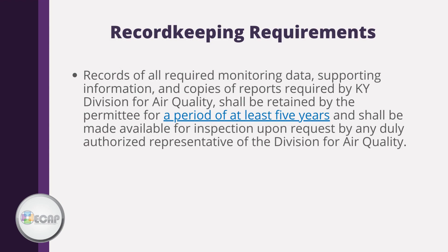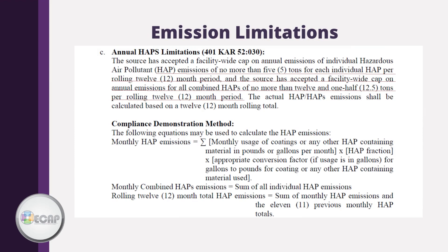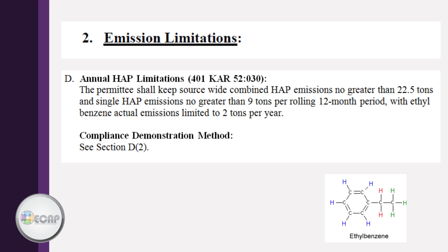Record keeping is the backbone of permit compliance and must be performed and reported as indicated by the permit. Records must be kept for a period of at least five years and must always be available for review. Hazardous air pollutants and volatile organic compound limitations usually require 12-month rolling totals to be kept. Your permit explains how to calculate the rolling total, usually in Section D. An example of a true emission limit is when a limit is imposed for a particular pollutant. This example from a conditional major permit requires rolling totals of HAP and VOC emissions, indicating the facility cannot emit more than two tons per year of ethyl benzene.